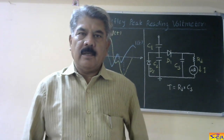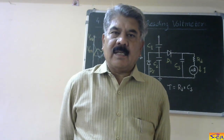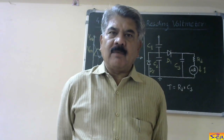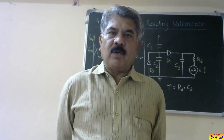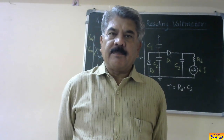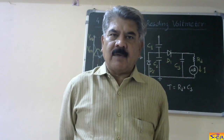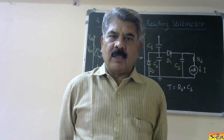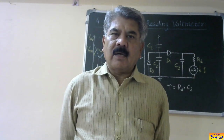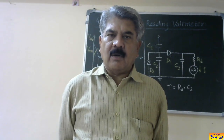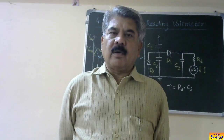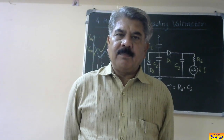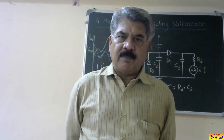Hello friends, good morning. In my previous lecture, I had explained the peak reading voltmeter. The peak reading voltmeter measures the peak value of the voltage. Now, the peak reading voltmeter is necessary because the relation V_peak equals root 2 times V_rms is valid only when the voltage waveform is sinusoidal, with no harmonics. In high voltage testing, the breakdown or flashover of the test object takes place only at the peak value. Therefore, it is necessary to measure the peak value of the voltage.